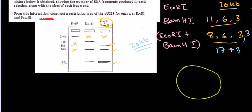The double digest totals only 17 KB, but the plasmid is 20 KB, so there must be another 3 KB fragment. We get only one visible band for 3 KB, but that band is darker and broader than others — this indicates there are actually two 3 KB fragments co-migrating at the same position on the gel. So for ECO R1 and BAM H1 together, the actual fragments are 8, 6, 3, and another 3 KB.